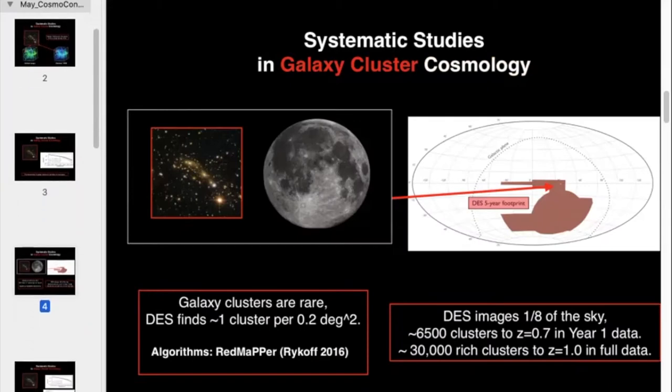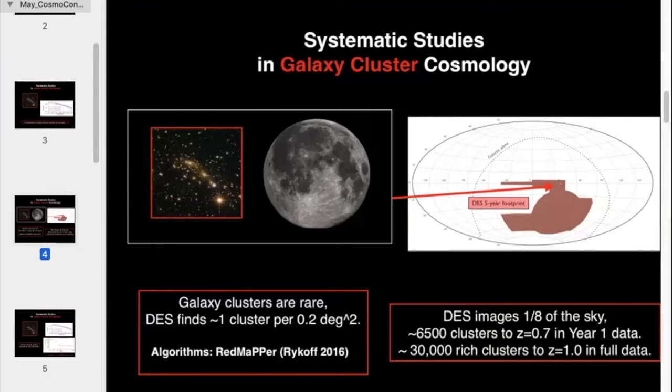Given the sensitivity of galaxy clusters to cosmology, they have become a main topic in ongoing and future cosmic experiments, such as the Dark Energy Survey or DES. As the most massive cosmic structures, galaxy clusters are pretty rare. Even for a deep survey like DES, we on average find about one cluster per 0.2 degree squares of the sky. That's one cluster per area of the moon. Fortunately, DES images about one-eighth of the sky. So even in year one data alone, we have found about 6,500 galaxy clusters to redshift 0.7. And we expect to find about 30,000 clusters all the way to redshift 1.0 in our full data set. And that should be enough data to study some cosmology.